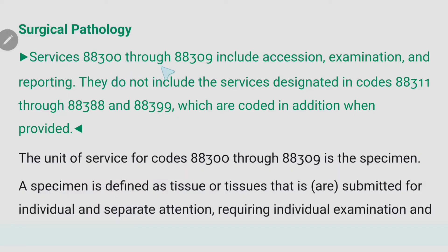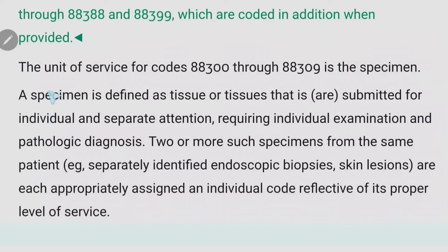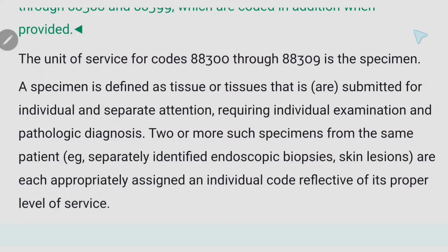Services 88300 through 88309 include accession, examination, and reporting in surgical pathology. The definition of a specimen is very important: a specimen is defined as tissue or tissues that is submitted for individual and separate attention requiring individual examination and pathologic diagnosis. Two or more specimens from the same patient are each appropriately assigned an individual code reflective of its proper level of service.